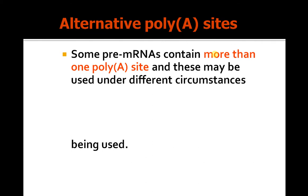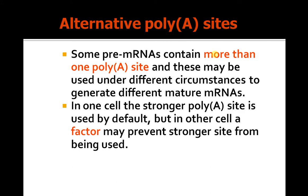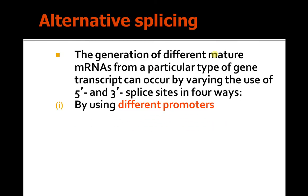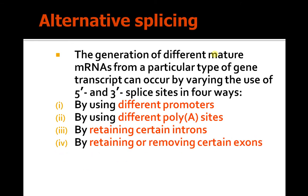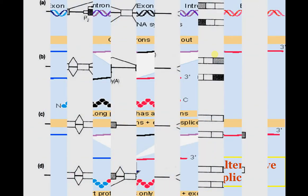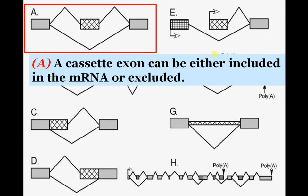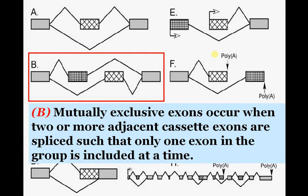Alternative poly-A sites allow a single pre-mRNA to generate more than one polypeptide in different cell types. Different circumstances generate different mRNAs; in one cell the stronger poly-A site is used, but in other cells factors may prevent the stronger site from being used. Alternative splicing is also generated by using different promoters, different poly-A sites, and by including or removing certain introns.